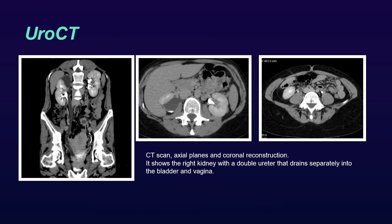On the CT scan, in axial and coronal reconstruction planes, we can see the right kidney with a double ureter that drains separately into the bladder and vagina.